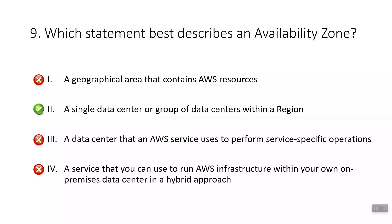A geographical area that contains AWS resources is called a region. A data center that an AWS service uses to perform service-specific operations is an edge location. A service that you use to run AWS infrastructure within your own on-premises data center in a hybrid approach is AWS Outpost.